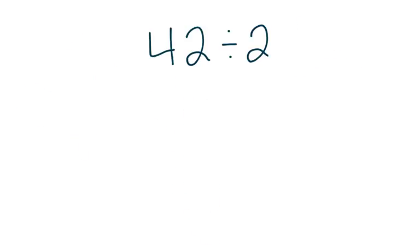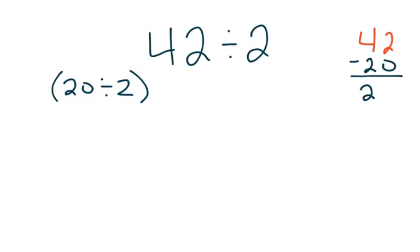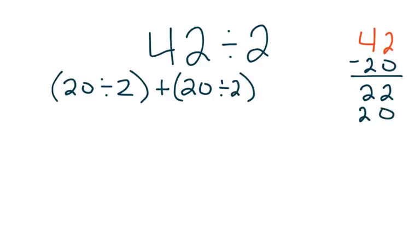Just like we just did with the area model, we're going to take our total of 42 and place that off to the side. Now we're going to break this problem into pieces that we can solve. So instead of having 42 divided by 2, maybe we would break it into 20 divided by 2. What I'm going to do is take 20 away from my 42 and be left with 22. Now, maybe I'm going to do another 20 divided by 2, and I'm going to subtract that 20, leaving me with 2. And then I know how to divide 2 divided by 2.